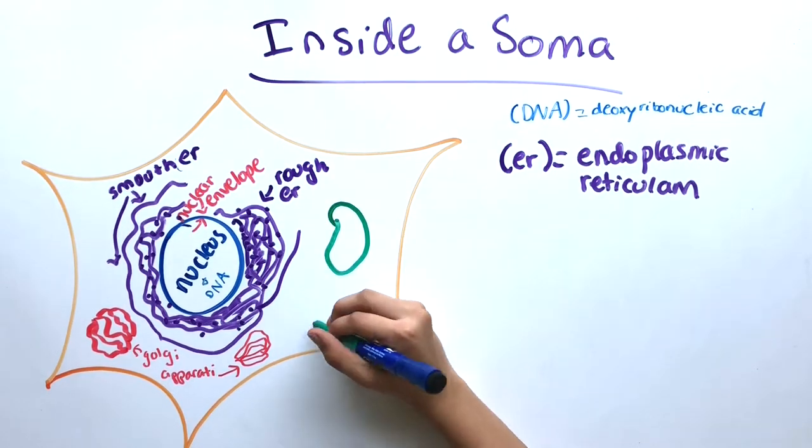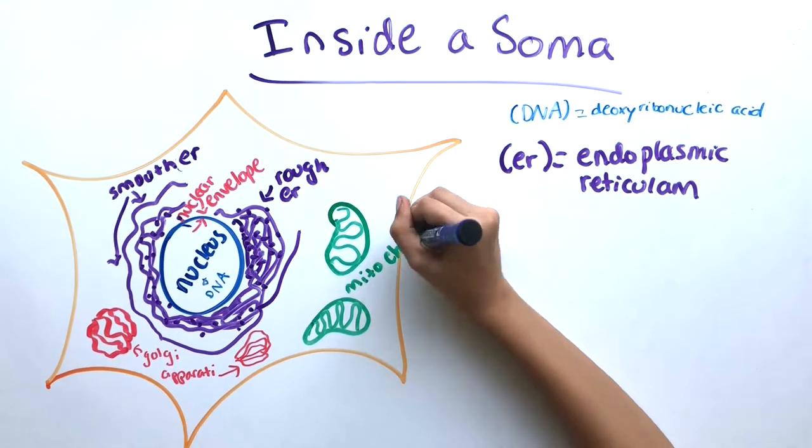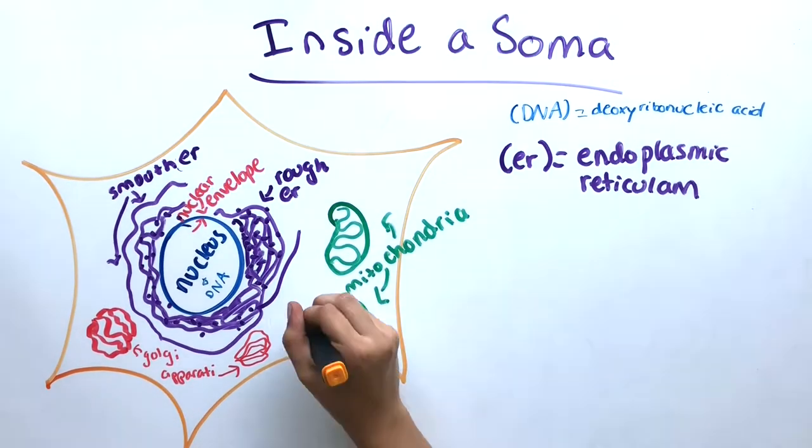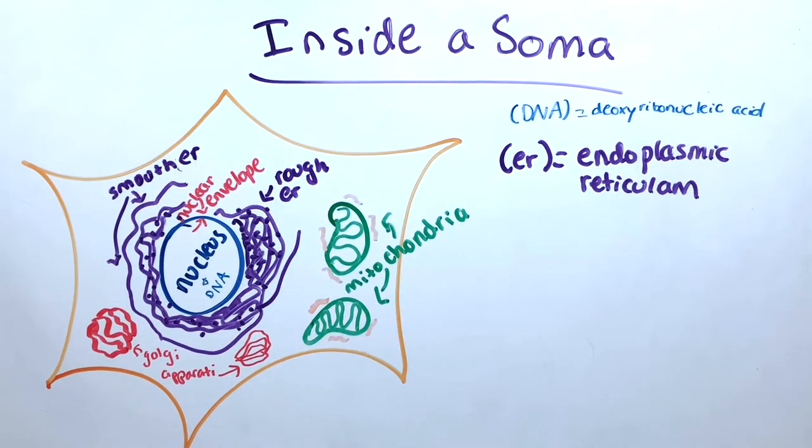The mitochondrion is a site of cellular respiration and produces adenosine triphosphate, also known as ATP, which is the cell's energy source.